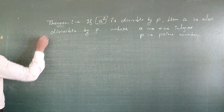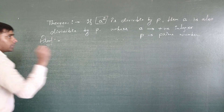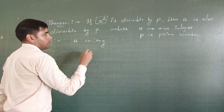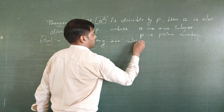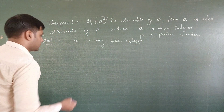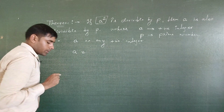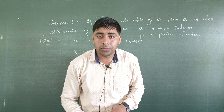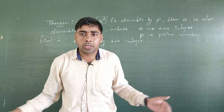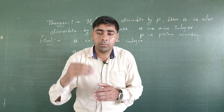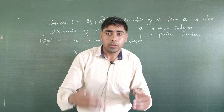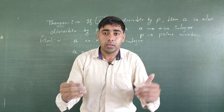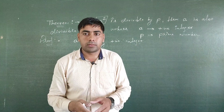Let's start the proof. Here, a is any positive integer. We can write a as the product of its prime factors, because by the Fundamental Theorem of Arithmetic, every composite number can be expressed as a product of its prime factors, and this factorization is unique except for the ordering of the prime factors.